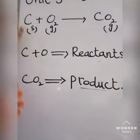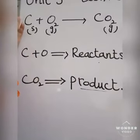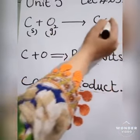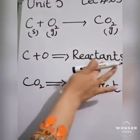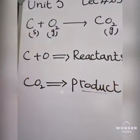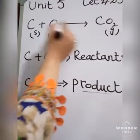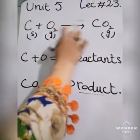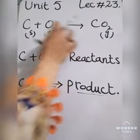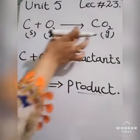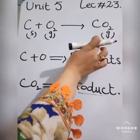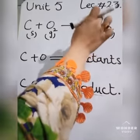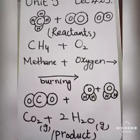Reactants are always written on the left side of a chemical reaction, and products are written on the right side. The arrow sign shows that the reactants are converted into the product. So products are formed on the right side of the chemical equation.